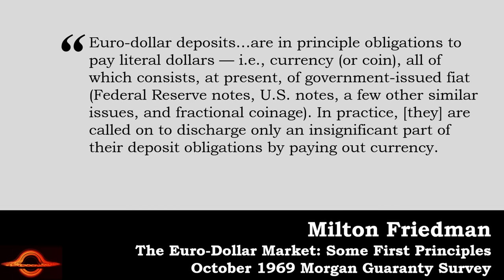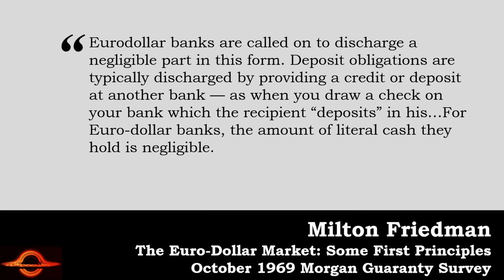As Milton Friedman said in 1969: Eurodollar deposits are in principle obligations to pay literal dollars — currency of government issue fiat. But in practice, these Eurodollar banks are called on to discharge only an insignificant part of their deposit obligations by paying out currency. Deposit obligations are typically discharged by providing a credit or deposit at another bank, as when you draw a check on your bank, which the recipient then deposits in his. For Eurodollar banks, the amount of literal cash they hold is negligible. This is not about Federal Reserve notes — it's about these banks creating claims and then transacting those claims all throughout the world.